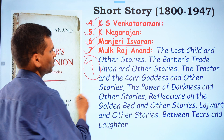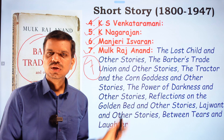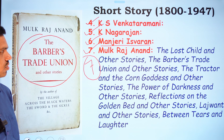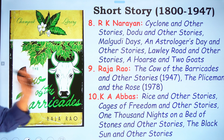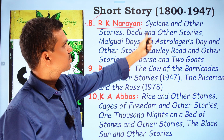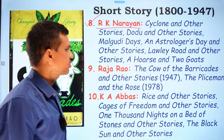The Barber's Trade Union and Other Stories is a notable Mulk Raj Anand collection worth reading to understand the characters and themes he depicted. R.K. Narayan also wrote famous short story collections including Cyclone and Other Stories, Dodu and Other Stories, Malgudi Days, An Astrologer's Day and Other Stories, and A Horse and Two Goats.